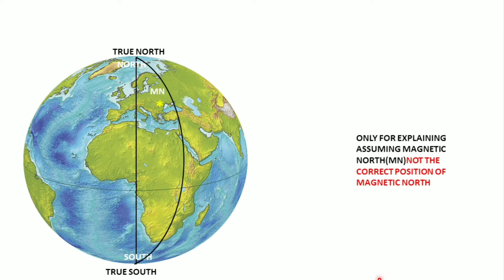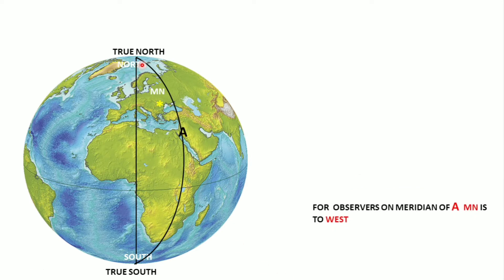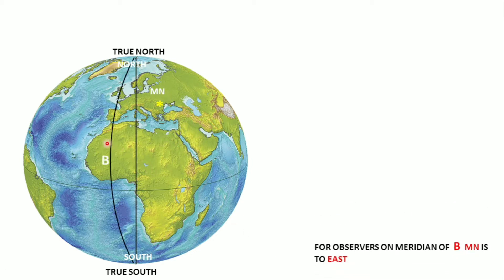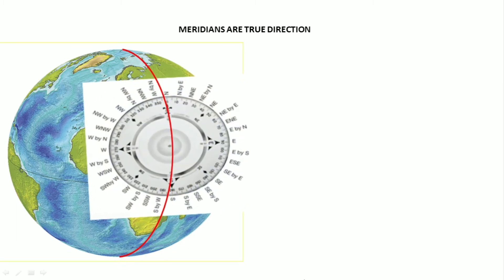Only for explanation purposes — though it is not the correct position — I placed magnetic north here. If there was an observer on this meridian, magnetic north is to the west of the observer. For another observer on another meridian, you can see that the magnetic north is to the east. So the position of magnetic north depends upon the position you are in.